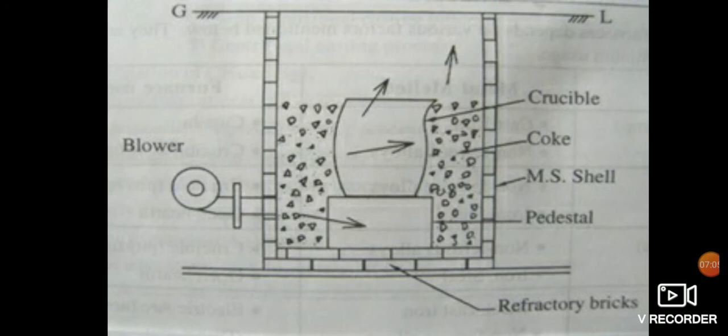The hot gases will escape to the atmosphere through the vent hole. Once the desired temperature of the molten metal is attained, the lid is opened and the crucible is lifted with the help of tongs. The molten metal is transferred to the ladle or directly poured into the mold cavity.